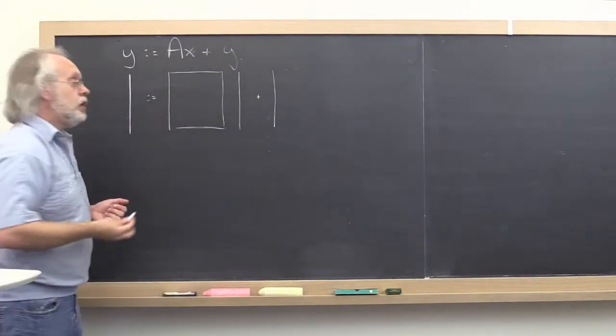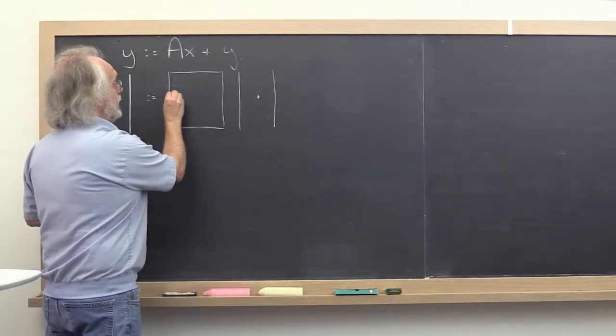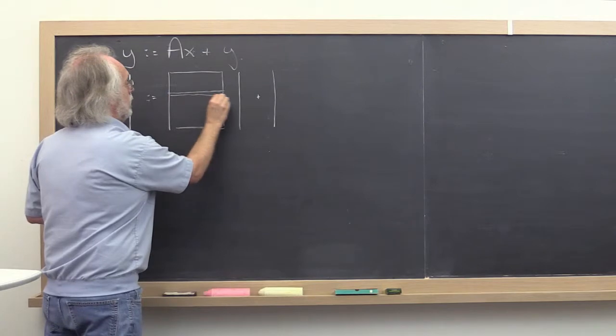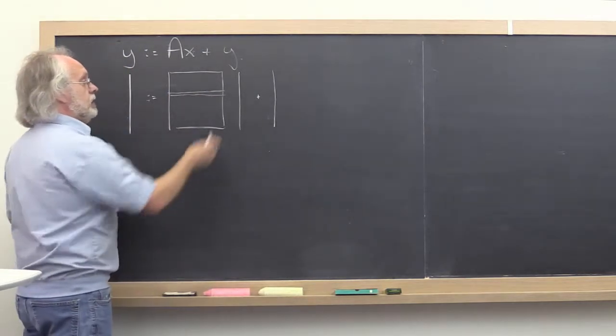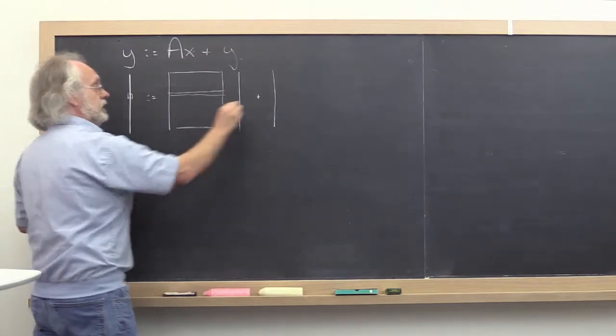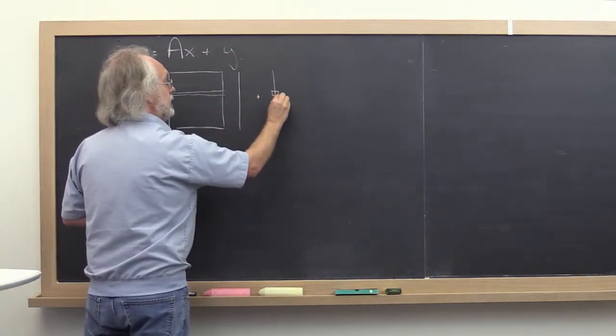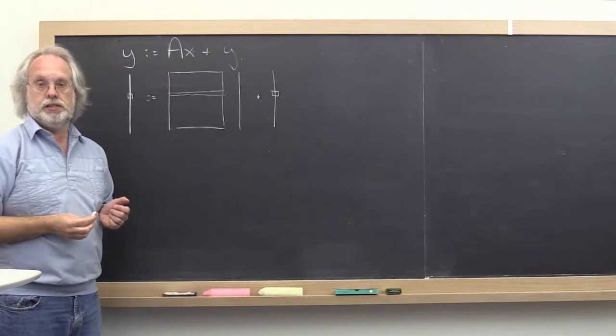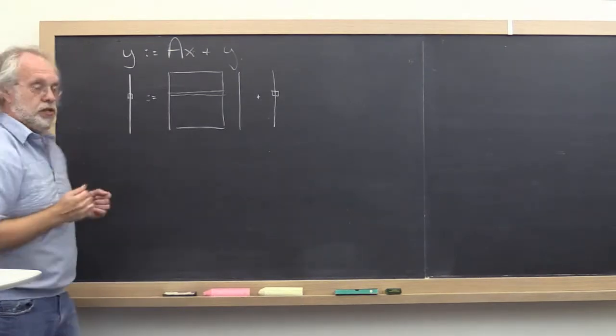And then you were taught how to do a dot product of the current row in A with the vector X to update the corresponding entry in vector Y. Notice how visual this is.